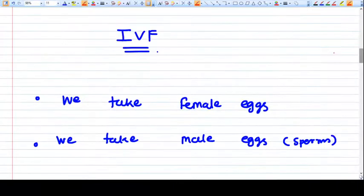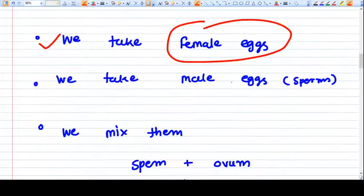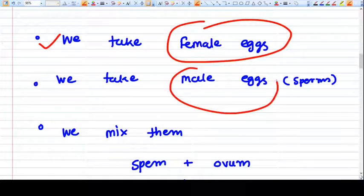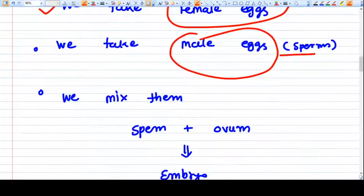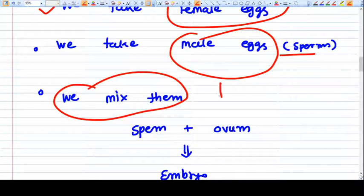So what we do in IVF: we basically take female eggs, that is ova, and we also take male sperm. What we do is mix them in a tube.